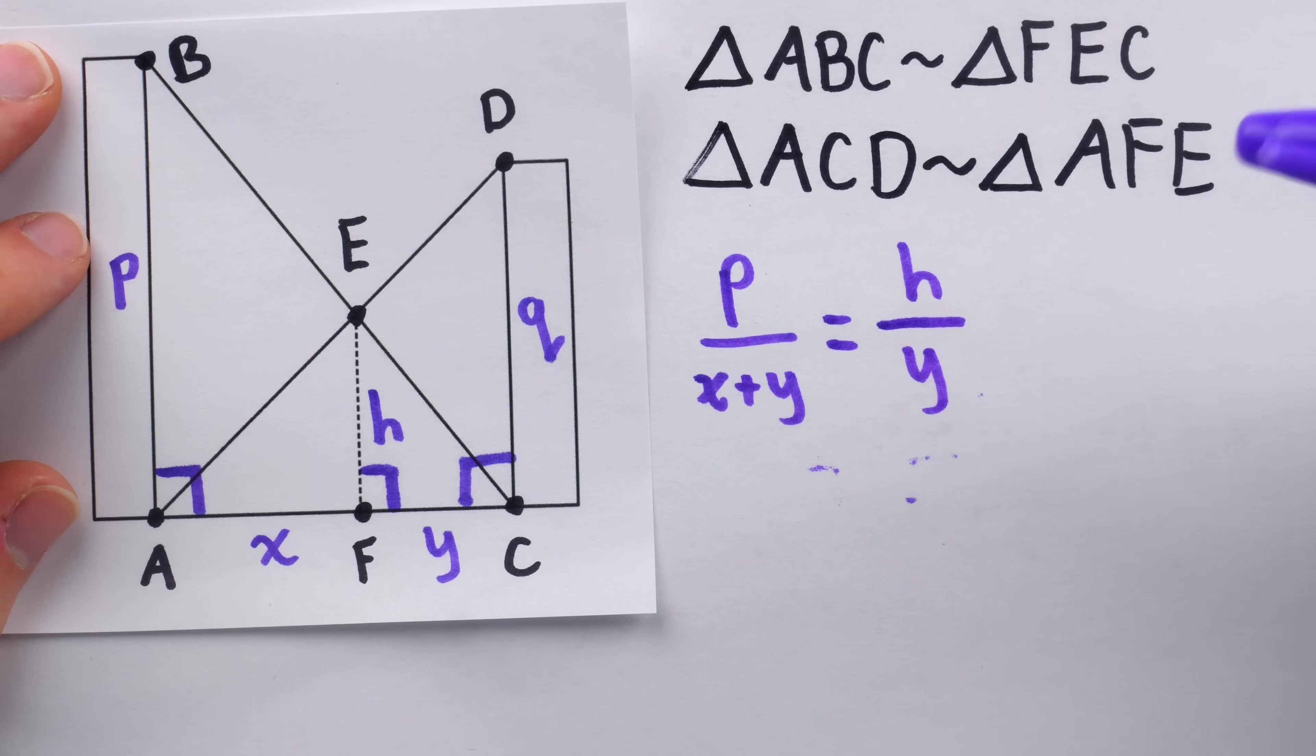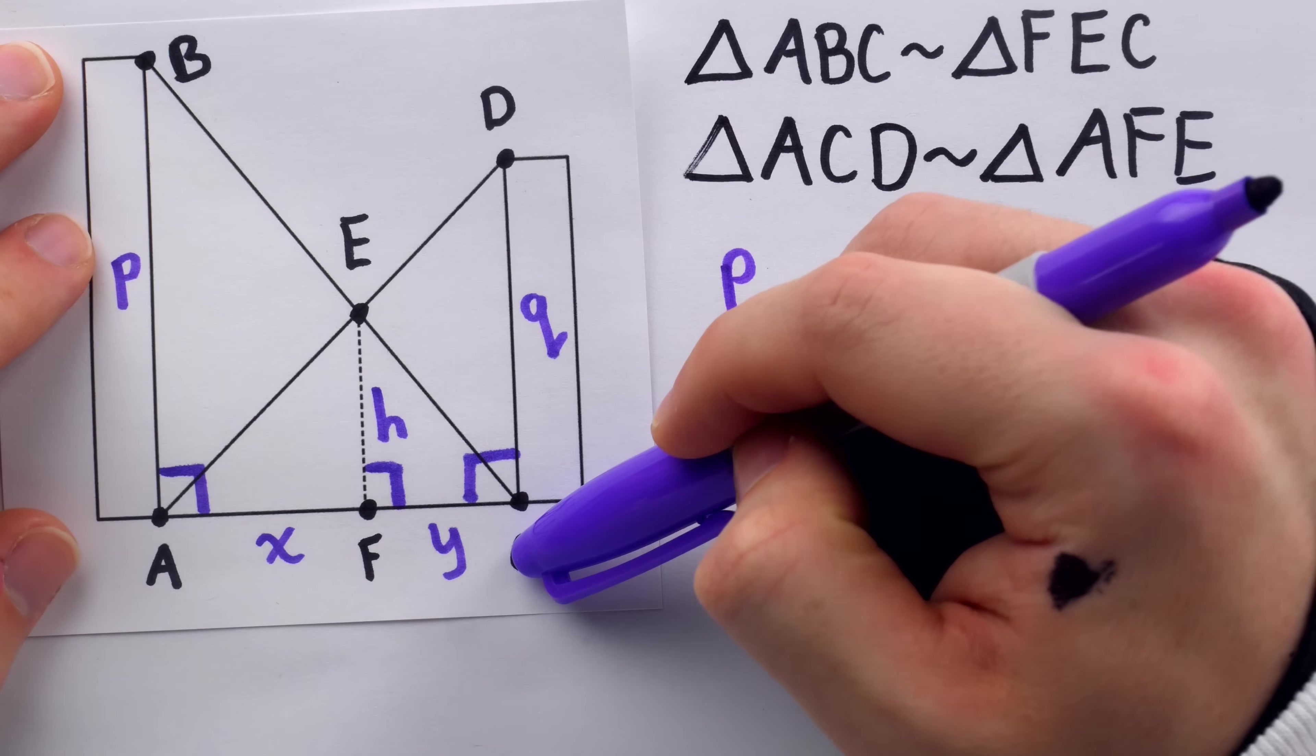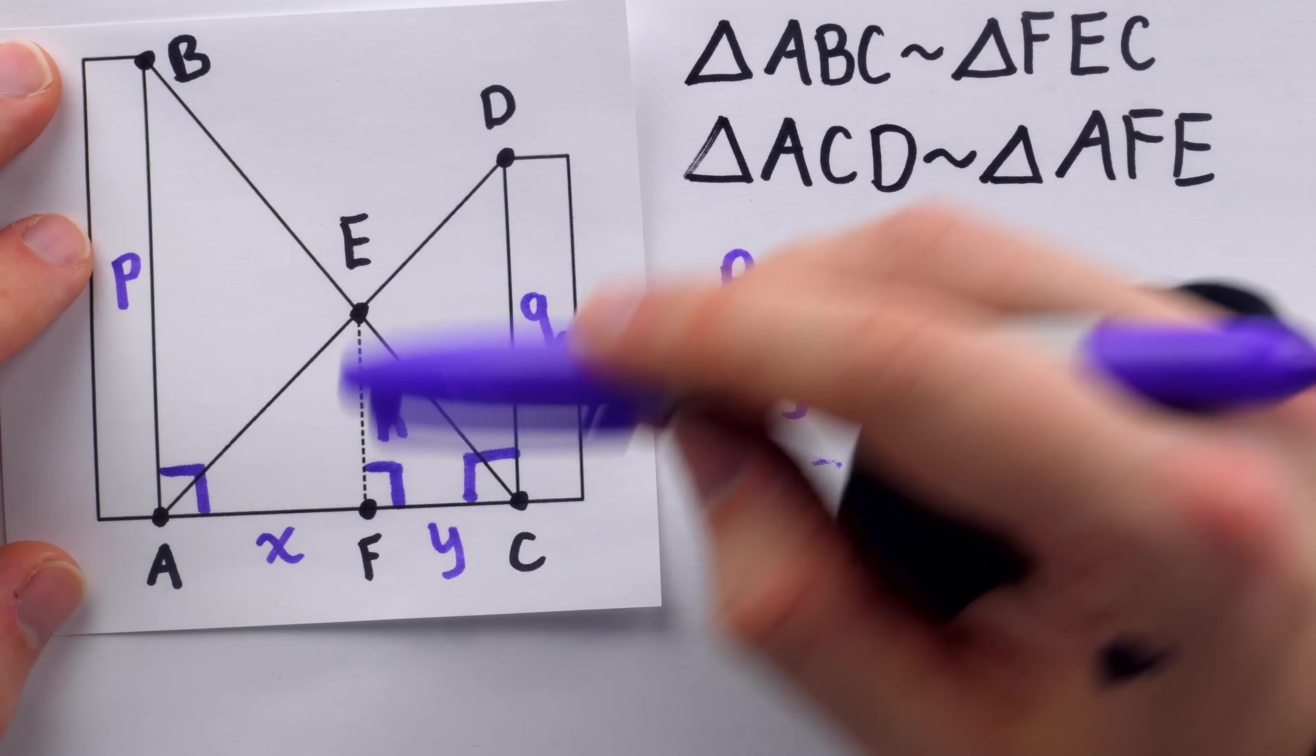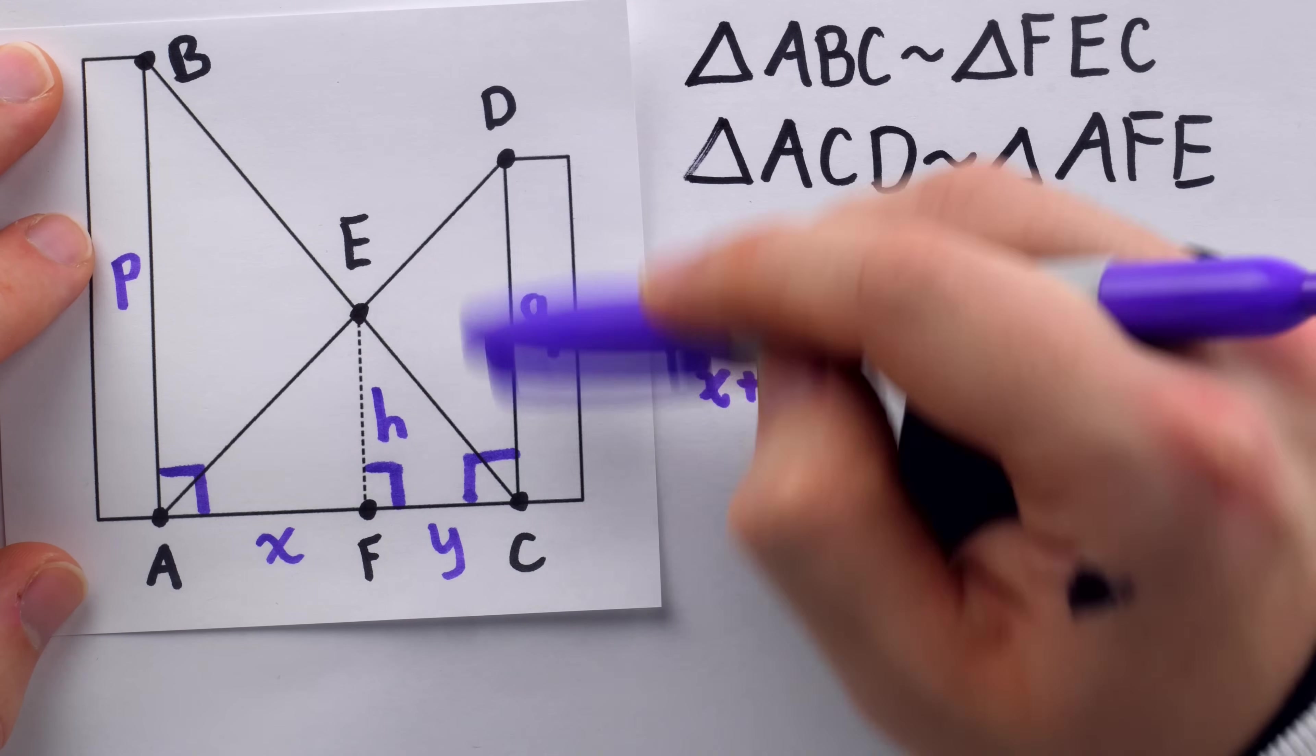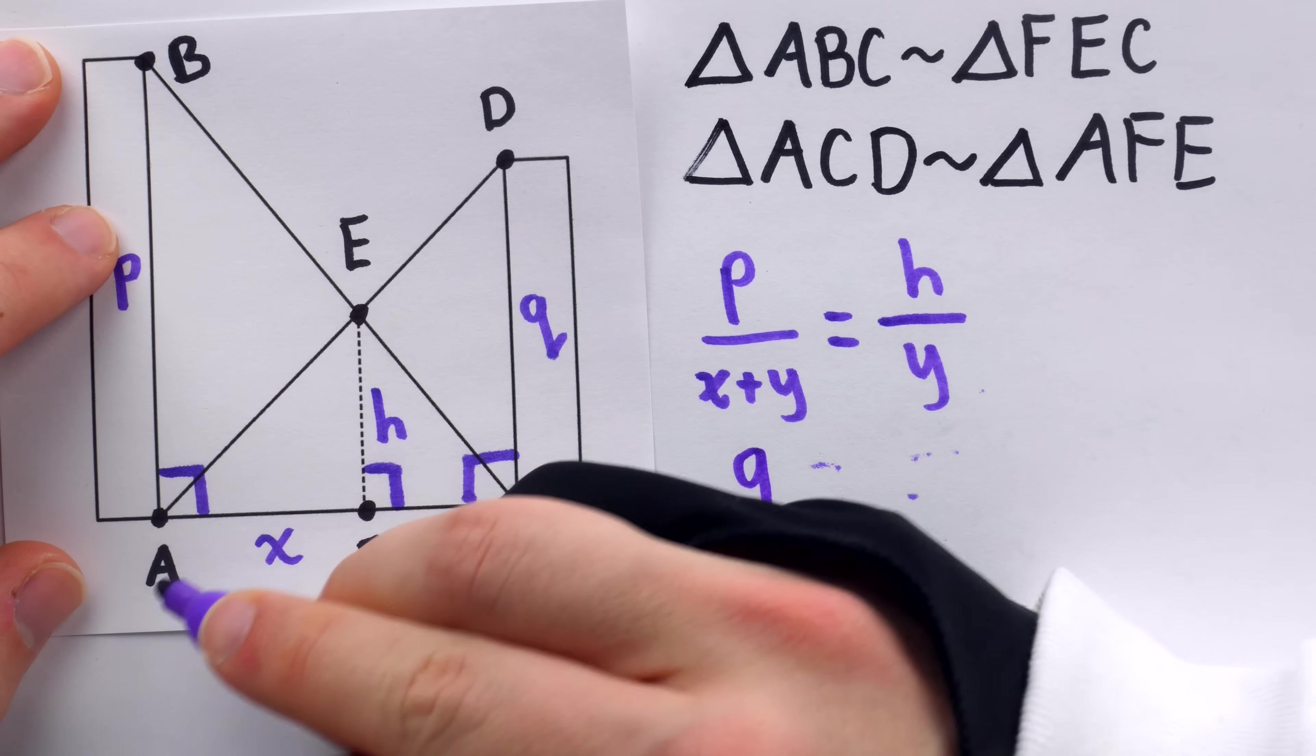And we can create a similar equation with our other pair of similar triangles. Indeed, the ratio of CD to CA must be the same as the ratio of FE to FA. That is, Q to X plus Y must equal H to X.